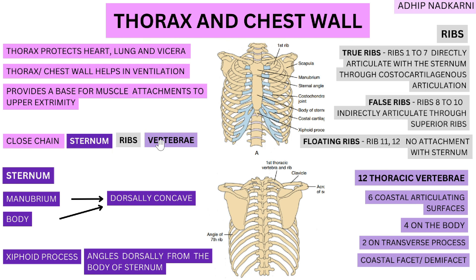An important point to remember is that all these structures are interlinked. The sternum is connected to the ribs, the ribs are connected to the thoracic vertebrae, and the thoracic vertebrae connect back to the ribs — forming a closed chain. If something goes wrong in the structure, the whole rib cage is affected.